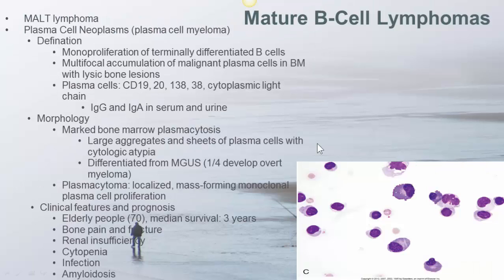Extranodal marginal zone B-cell lymphoma of mucosa-associated lymphoid tissue, or MALT lymphoma, is characterized by heterogeneous proliferation encompassing small and medium-sized lymphoid cells with plasma cells and scattered large lymphoid cells. This disease is often seen in autoimmune diseases such as Sjögren's syndrome and Hashimoto's thyroiditis, or infections such as H. pylori or hepatitis C infection.